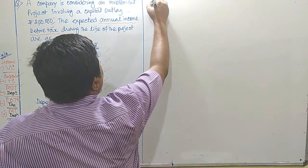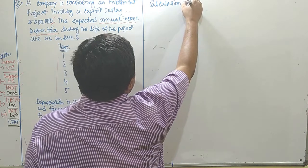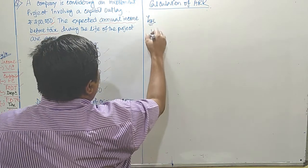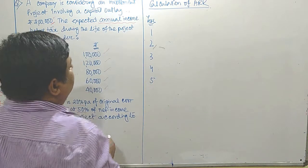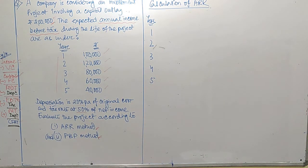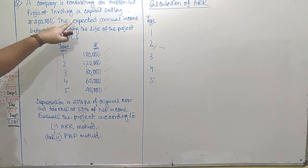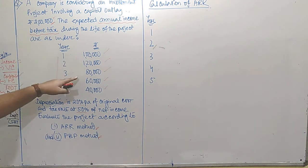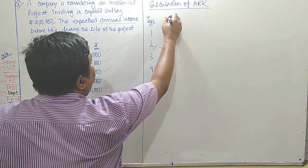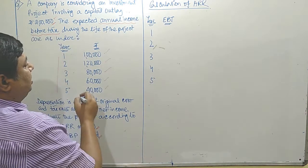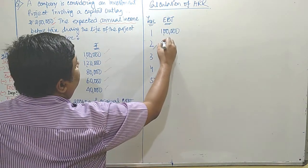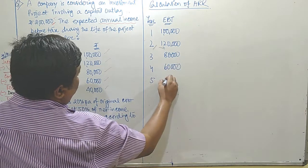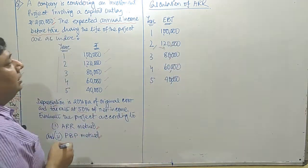Calculation of ARR. We have 5 consecutive years. The next column is income — as mentioned, the expected annual income before tax, that is EBT, earning before tax. First year it is 1 lakh rupees, second year 1 lakh 20,000, third year 80,000, fourth year 60,000, and fifth year 40,000. These are the income levels.